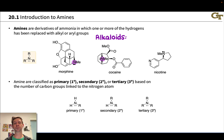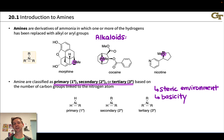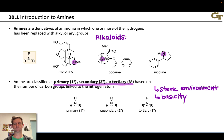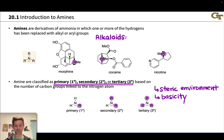We can classify amines by the number of carbons attached to the nitrogen atom. Primary, secondary, and tertiary are the terms used, and the reasons relate to differences in the steric environment around the nitrogen. A primary amine has one R group linked to the amino nitrogen (an NH2 group); a secondary amine has two R groups (an NH); and a tertiary amine has three R groups and no hydrogens linked to the amino nitrogen.